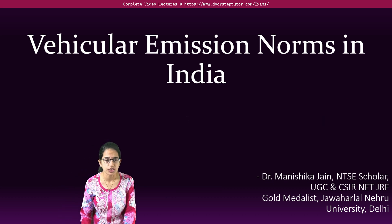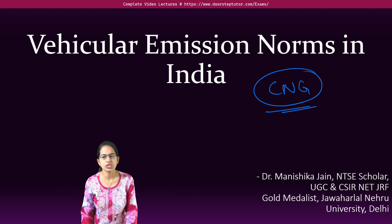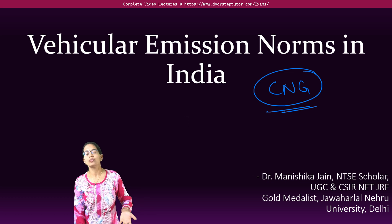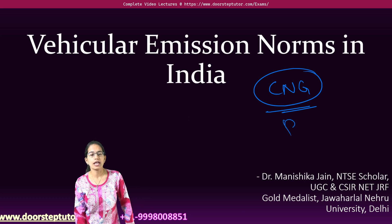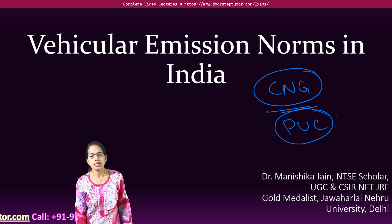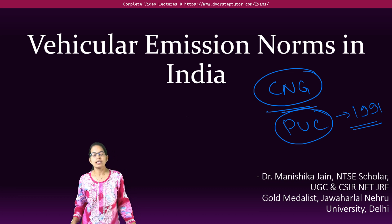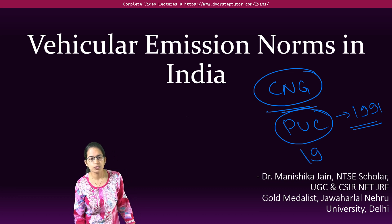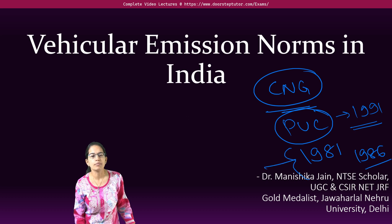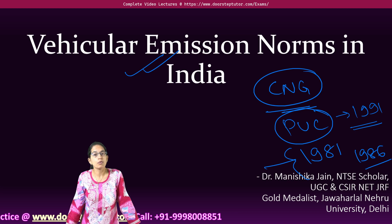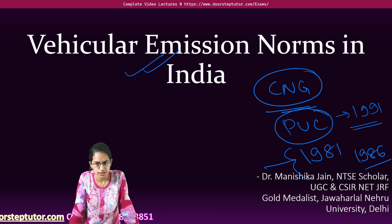Switching to CNG was one such initiative by the government. With CNG, new parameters were also brought in, and PUC — Pollution Under Control check — was introduced. PUC came into effect in 1991. Then there was the Air Act brought in 1981, the Environment Act 1986, and all of these talked about bringing some kind of regulations on emissions from vehicles.